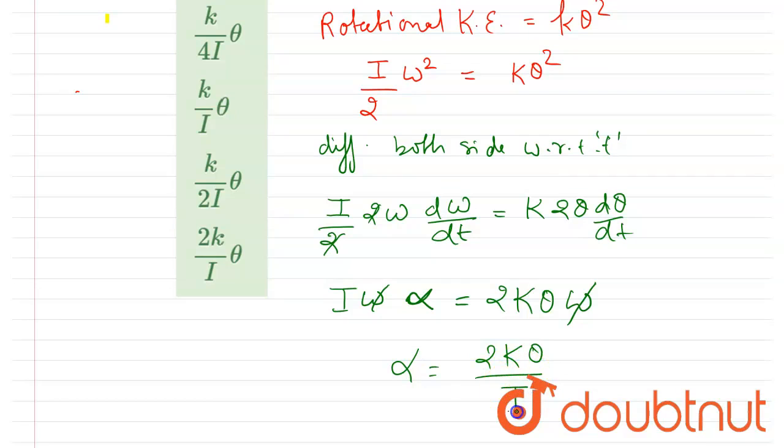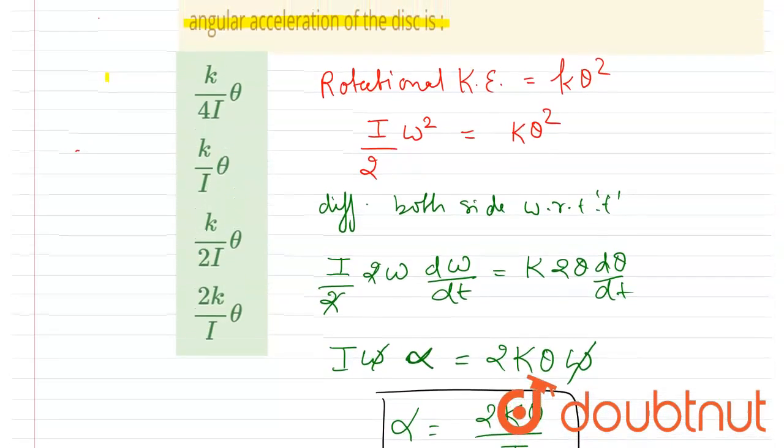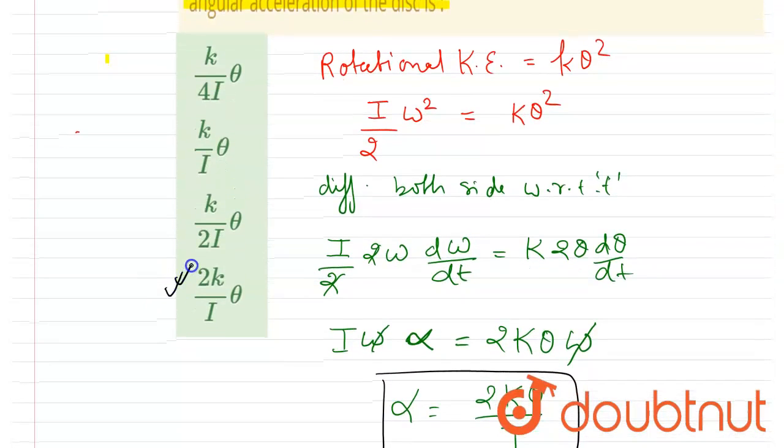So from here you will get alpha equals 2k theta by I. If you see in the equation, we were asked about the angular acceleration, and we got the angular acceleration is 2k theta by I. You can match—option D is the correct one.